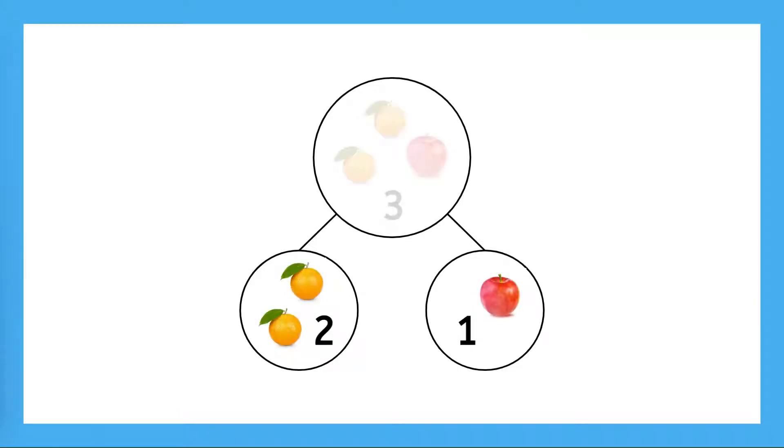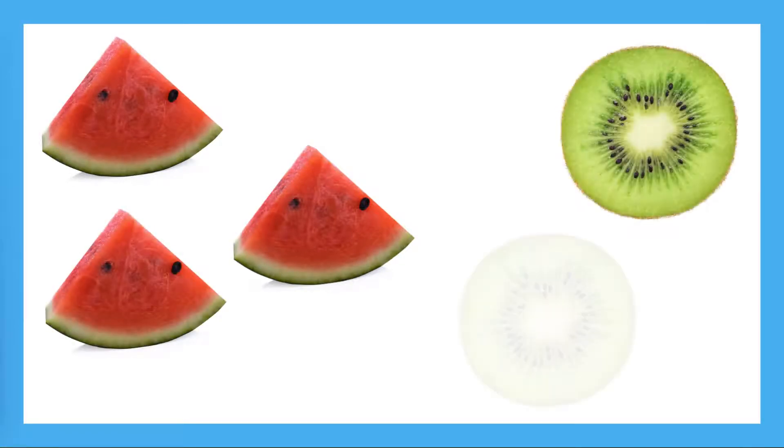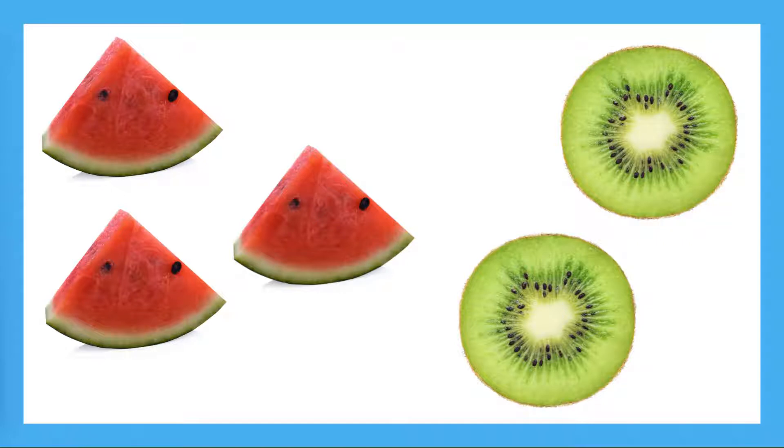In our last lesson, you helped me think about parts and whole to figure out how much fruit I had. Those apples and oranges were so tasty that I decided to eat some more fruit for breakfast today. Here's the problem. I started to slice up some watermelons and kiwis, but I kind of lost count. I know I had three watermelon slices and two kiwi slices, but I don't remember how many I had in all. Do you think we can use these parts to find the whole? Let's find out!